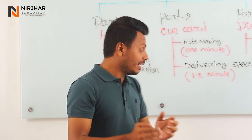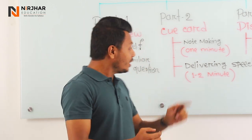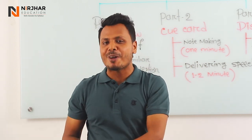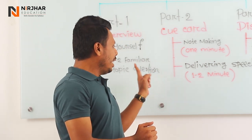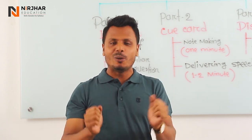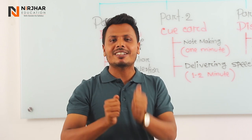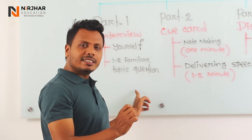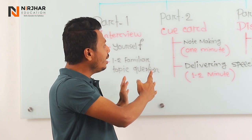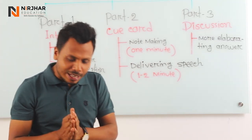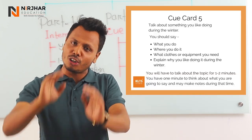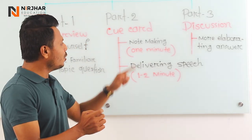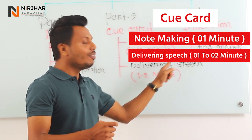In Part 1, you will be asked basic questions about yourself, your family, and familiar topics. You should answer clearly and naturally. Part 2 is the Cue Card — basically a topic on which you have to talk and deliver your speech.